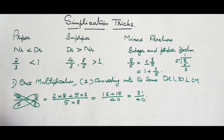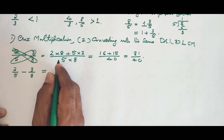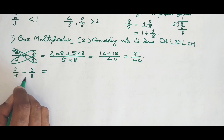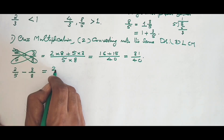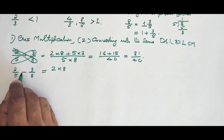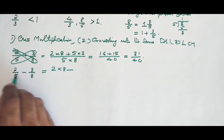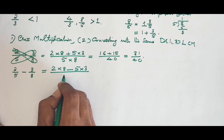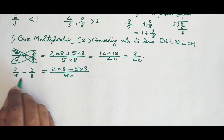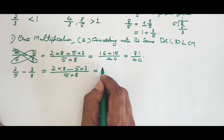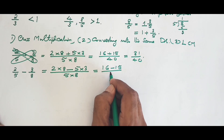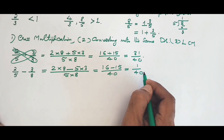Now, supposing you are subtracting three over eight from two over five, you use the same cross multiplication method. First multiply two and eight as before, but the connecting sign is minus instead of plus. Then five multiplied by three, divided by five multiplied by eight. This gives 16 minus 15 divided by 40, which is 1 over 40.